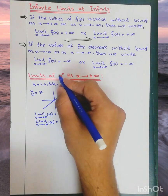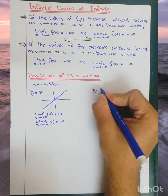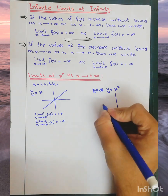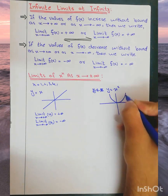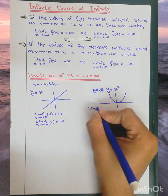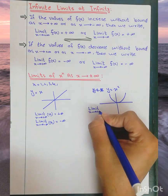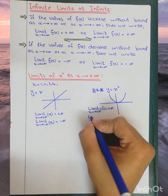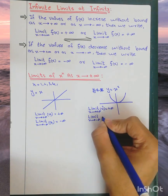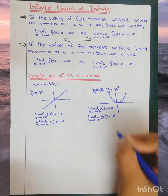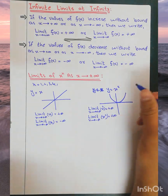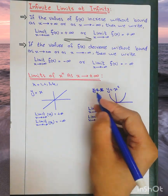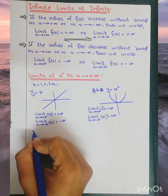Now we find the case for n equals 2, using y equals x squared. We plot the graph — this is the parabola f(x). The limit as x approaches positive infinity of x squared equals positive infinity, and the limit as x approaches negative infinity of x squared is also equal to positive infinity.